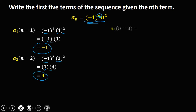For the third term, that's a sub 3. So n is equal to 3. So negative 1 to the power 3 times 3 squared. Negative 1 to the power 3 is negative 1, and 3 squared is 9. 9 times negative 1 is negative 9. So this is the third term.